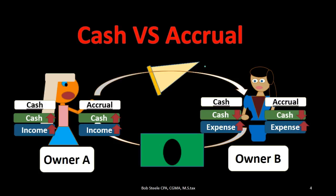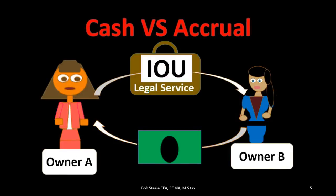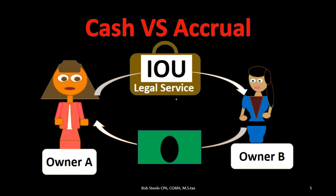Now let's think of a situation in which the time of the cash exchange is different from the time that the work happens — that will make the differences between these methods greater. We have a lawyer as owner A, and owner B needs legal services. Owner A says: I'll give you legal services, but I need payment up front and I will provide the legal services in the future. So cash has changed hands, but the work has not been done — all we have is a promise to do work in the future.